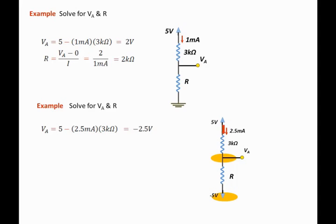And we know the current that's passing through it. It is the same current that is flowing through the 3 kilo ohm resistor. We can apply Ohm's law to solve for the resistor value R.